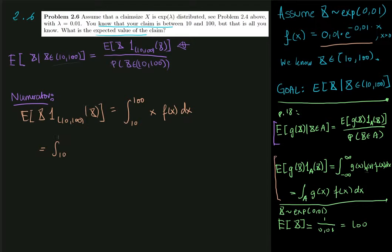So we want to integrate from 10 to 100 over x multiplied by 0.01 multiplied by e to the minus 0.01x dx. And now we know that the density is only equal to this when x is greater than zero. But everything is okay because we're integrating on an interval where all the values are greater than zero.